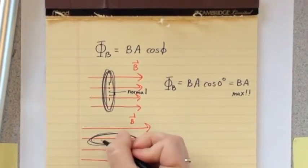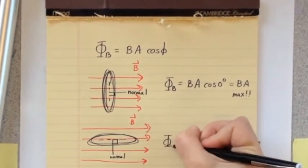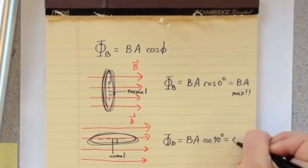If the field is parallel to the area, so that no field lines cross through it, then phi equals 90 degrees, and the flux will equal zero.